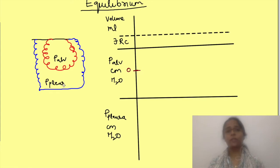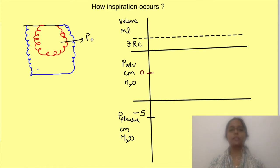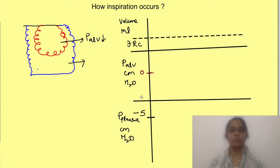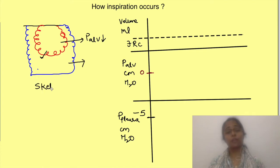At this equilibrium state, alveolar pressure equals atmospheric pressure — referred to as zero relative to atmospheric pressure — so no more air flows into the lungs. Pleural pressure is negative at approximately minus 5 cm water. To bring about inspiration, the pressure inside the lungs must be decreased further. Since the lungs are inside the thoracic cage, a closed cavity, volume and pressure changes in the thoracic cage are communicated to the lungs, requiring external forces to produce these changes from the resting position.